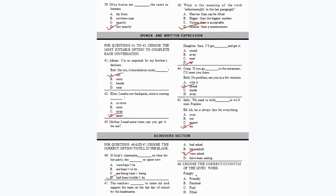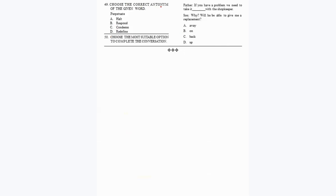Question 48: Choose the correct synonym of 'fraught.' 'Fraught' means filled with something unpleasant. 'Frail' means weak or delicate. The correct synonym is 'filled' — option D. Question 49: Choose the correct antonym of 'perpetuate.' 'Perpetuate' means to progress or continue; the antonym is 'halt,' meaning to stop — option A.